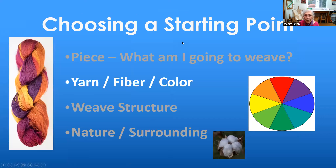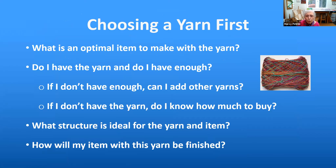Sometimes I start my projects with a yarn. I don't stash a whole lot of yarns — I have favorite vendors who can get me yarn quickly. If I'm choosing a yarn first, I have all the same questions: What's the optimal item to make with this yarn? Do I have enough, or can I get more, or add other yarns? What structure is ideal for this yarn and item, and how will the finished items be finished?